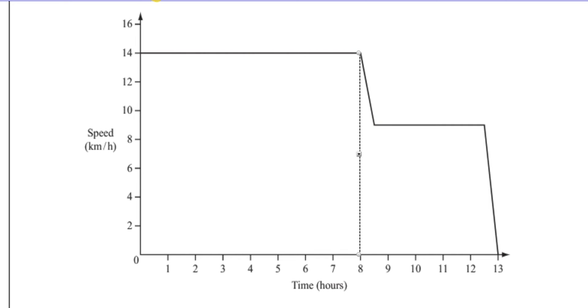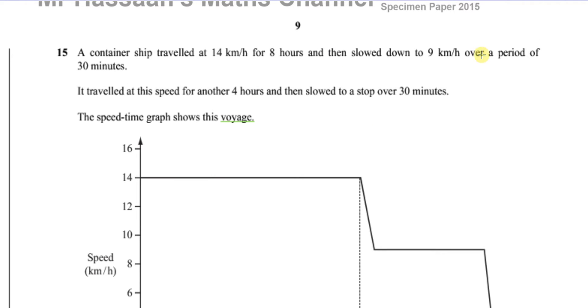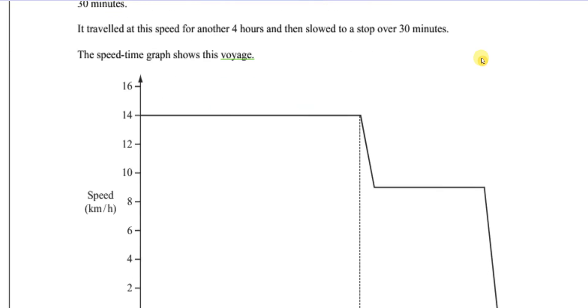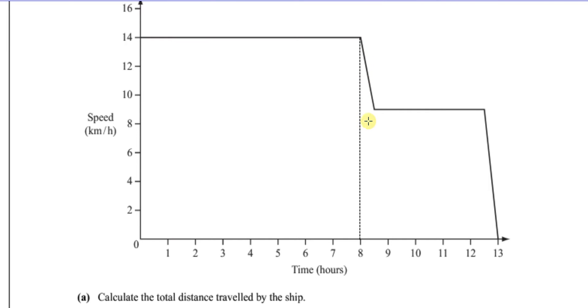And then for the next half an hour, it slows down constantly until it reaches 9 km per hour. So it's reducing its speed at a constant rate until 8.30, and it reaches the speed of 9 km per hour.